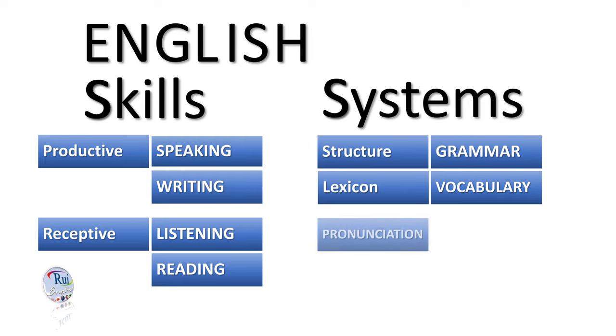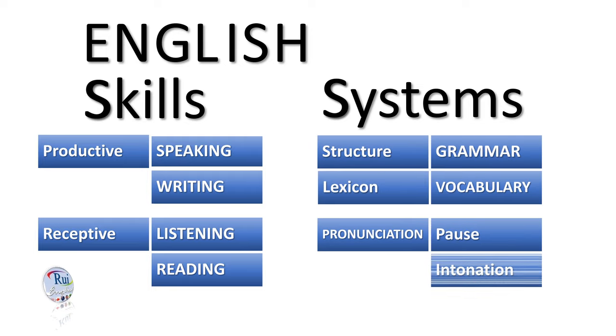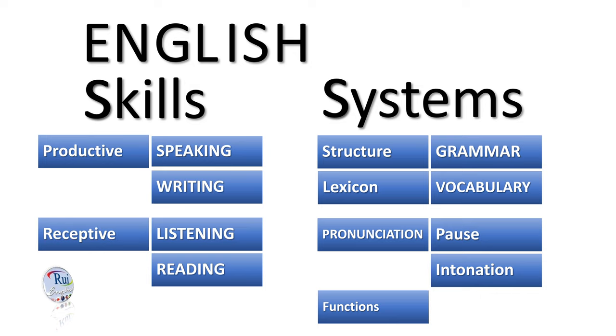The English language can be broadly categorized into four key areas – skills, systems, pronunciation, and functions.